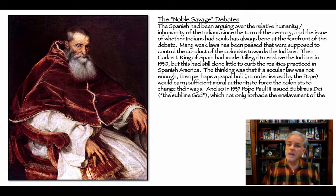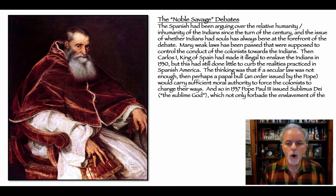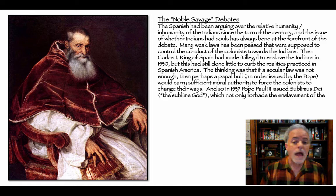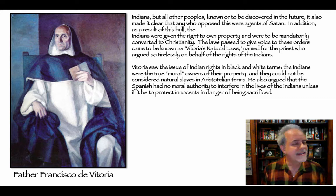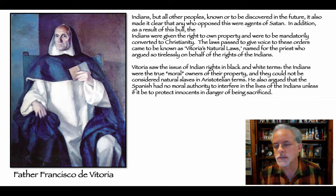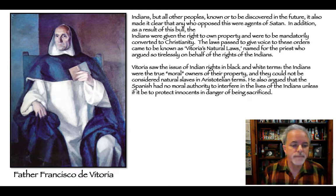The thinking was that if a secular law was not enough, perhaps a papal bull — an order from the pope — would carry sufficient moral authority to force colonists to change their ways. So in 1537, Pope Paul III issued Sublimus Dei, the 'Sublime God,' which not only forbade the enslavement of the Indians but of all other peoples known or to be discovered. It also declared that any who opposed this were agents of Satan, and that Indians were given the right to own property and must be converted to Christianity.